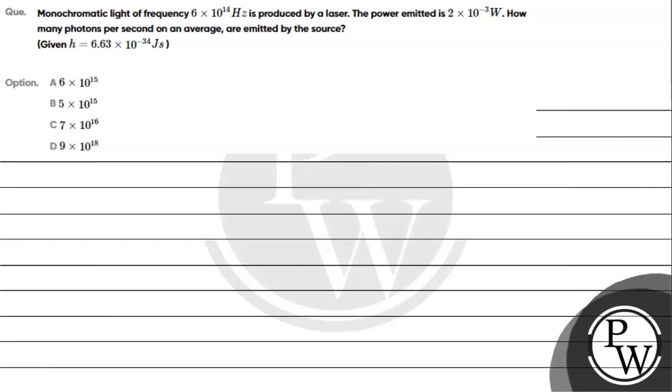Hello, let's read the given question. The question says: monochromatic light of frequency 6×10^14 Hz is produced by a laser. The power emitted is 2×10^-3 watt. How many photons per second on average are emitted by the source?